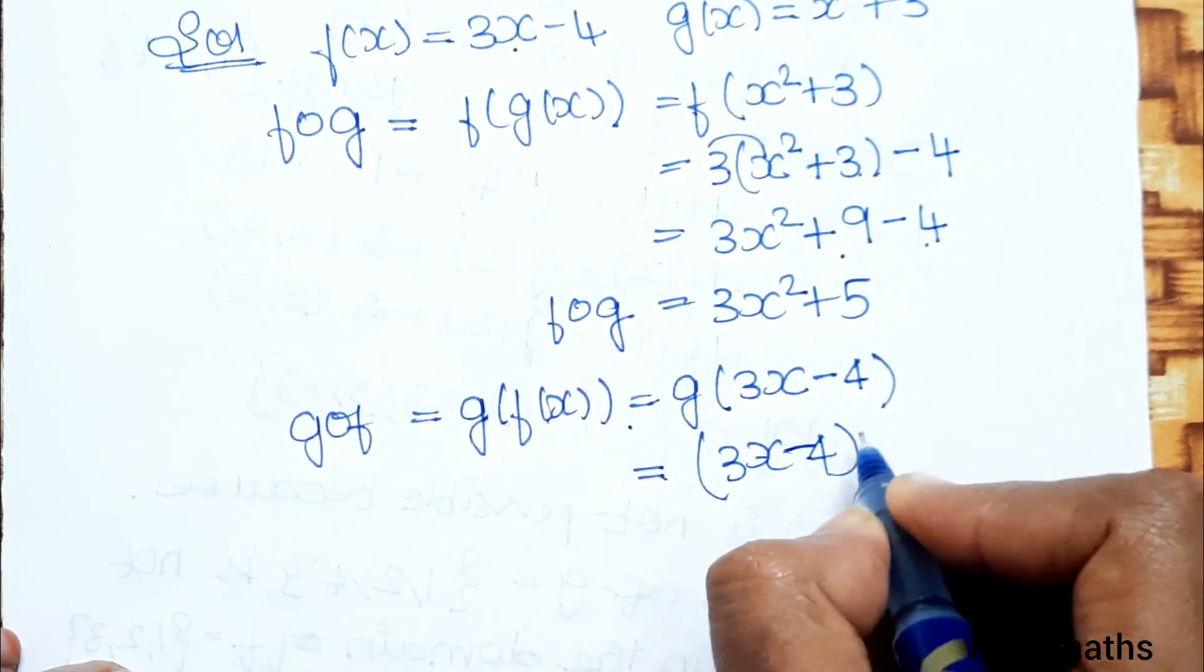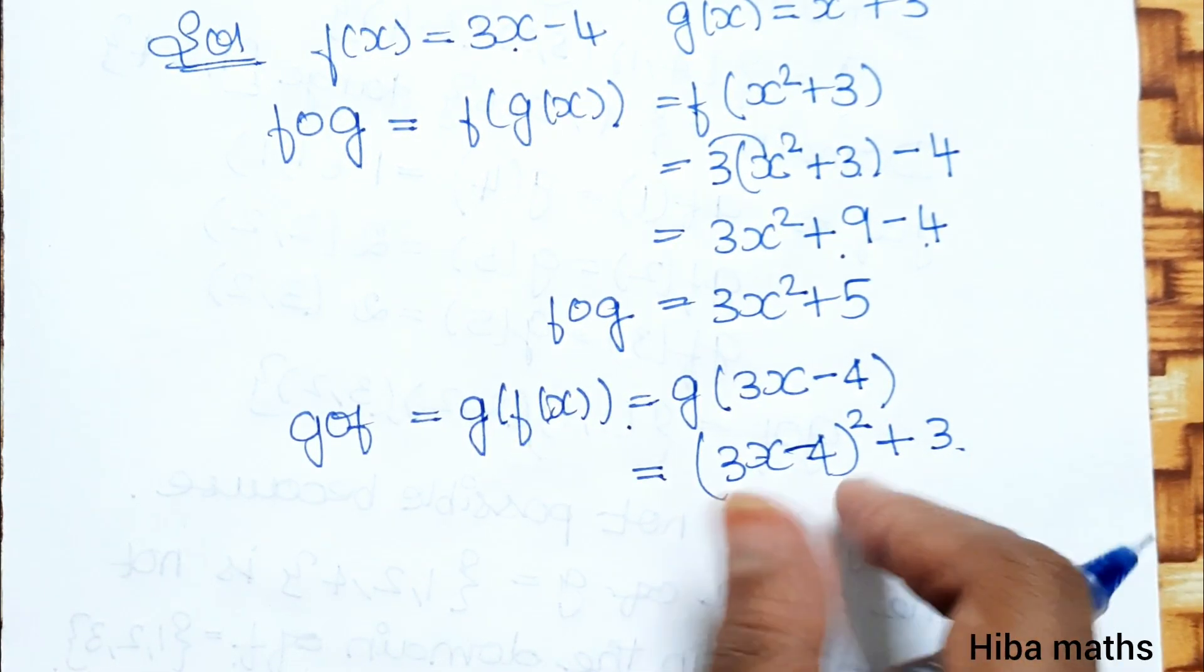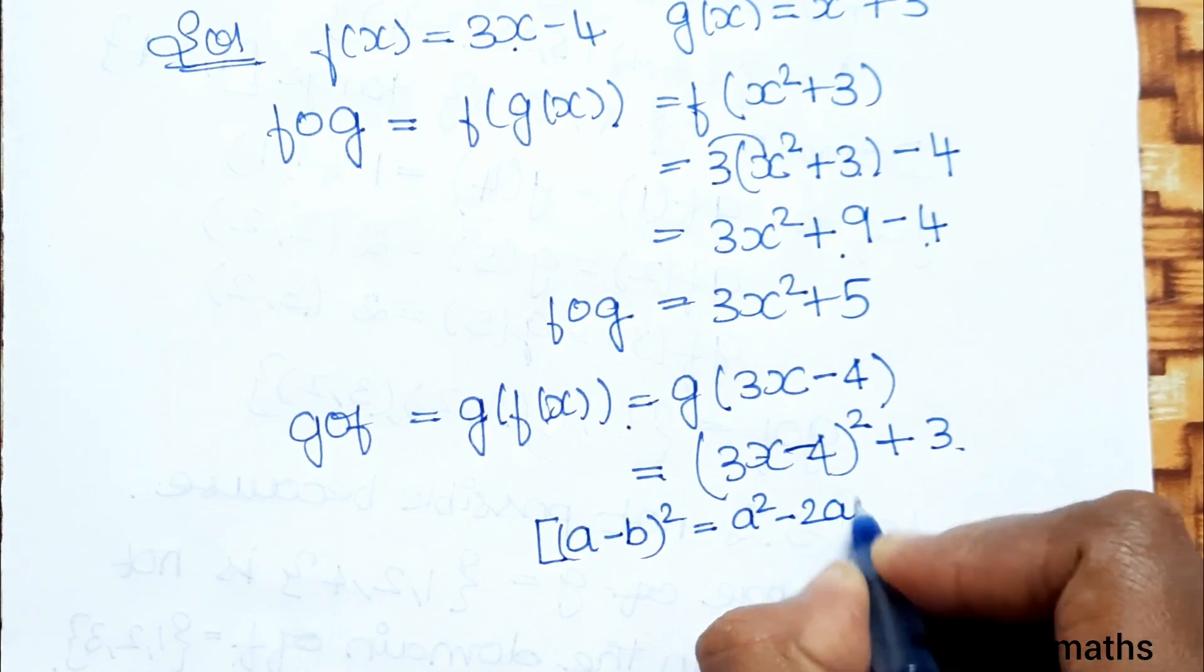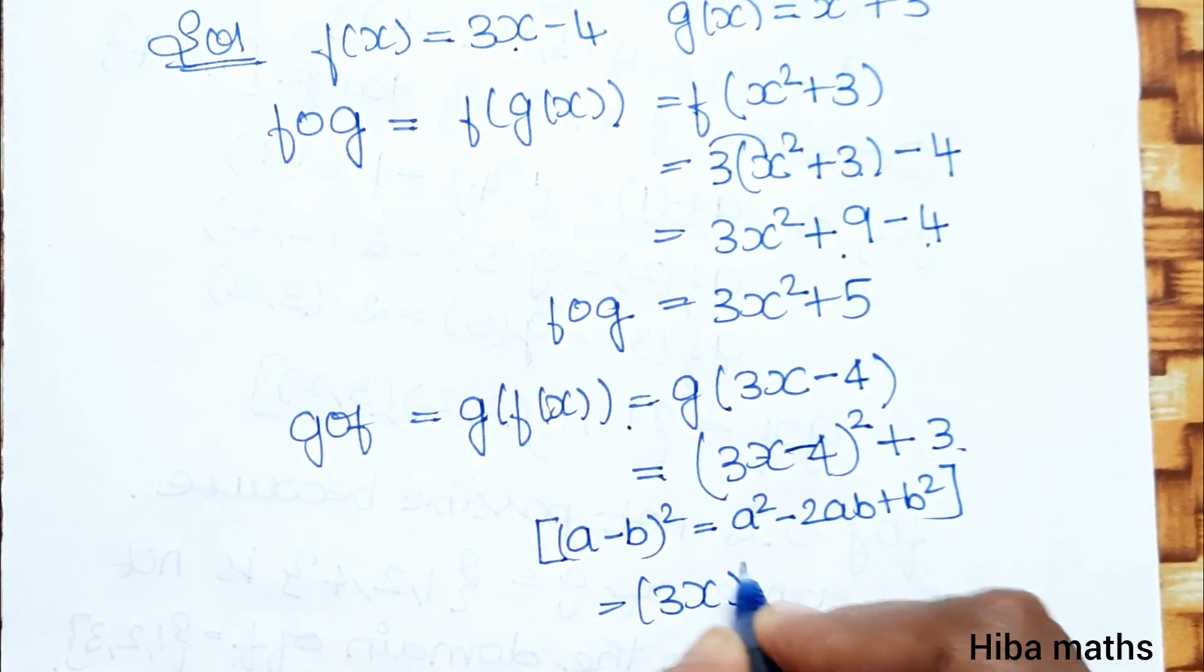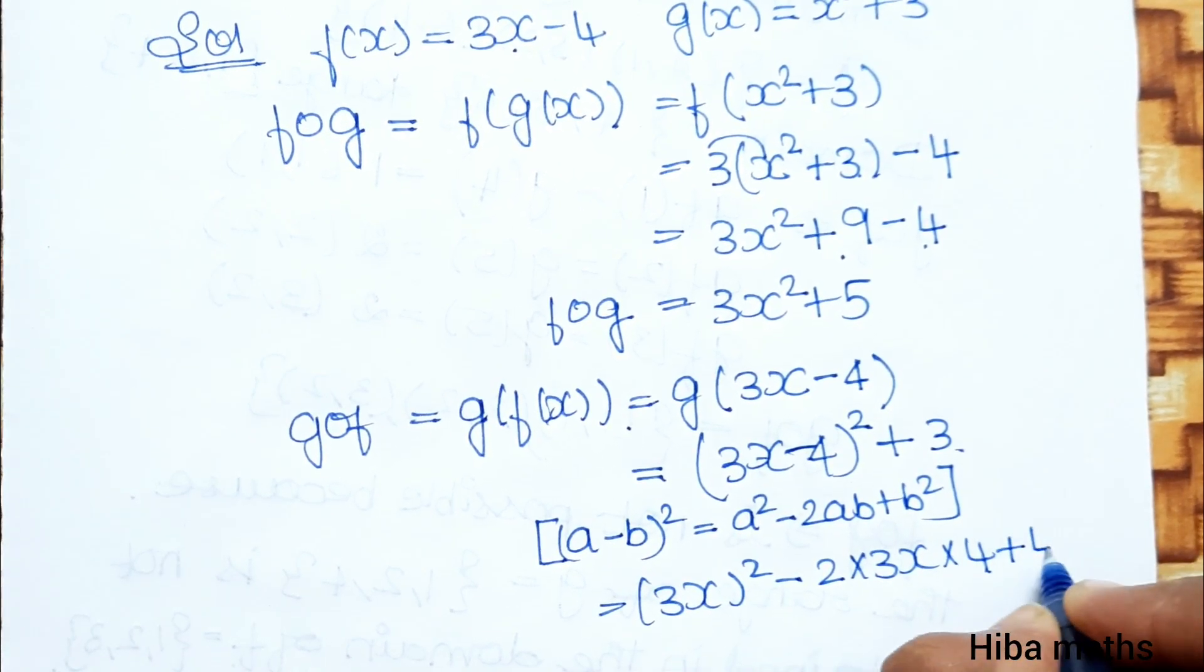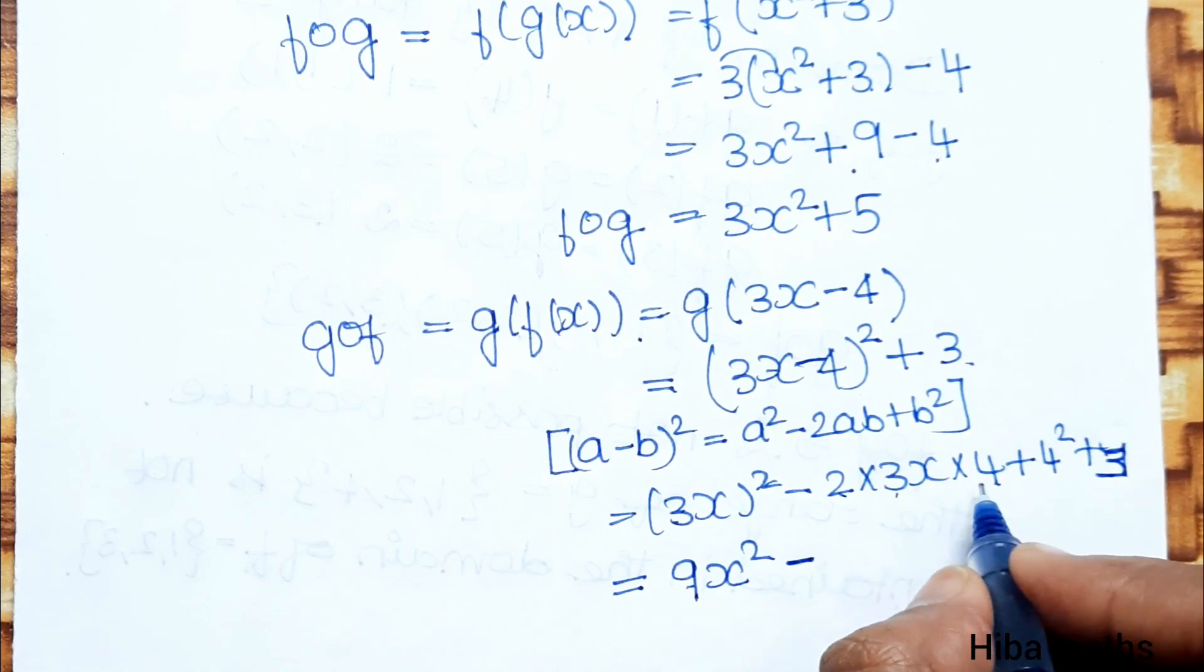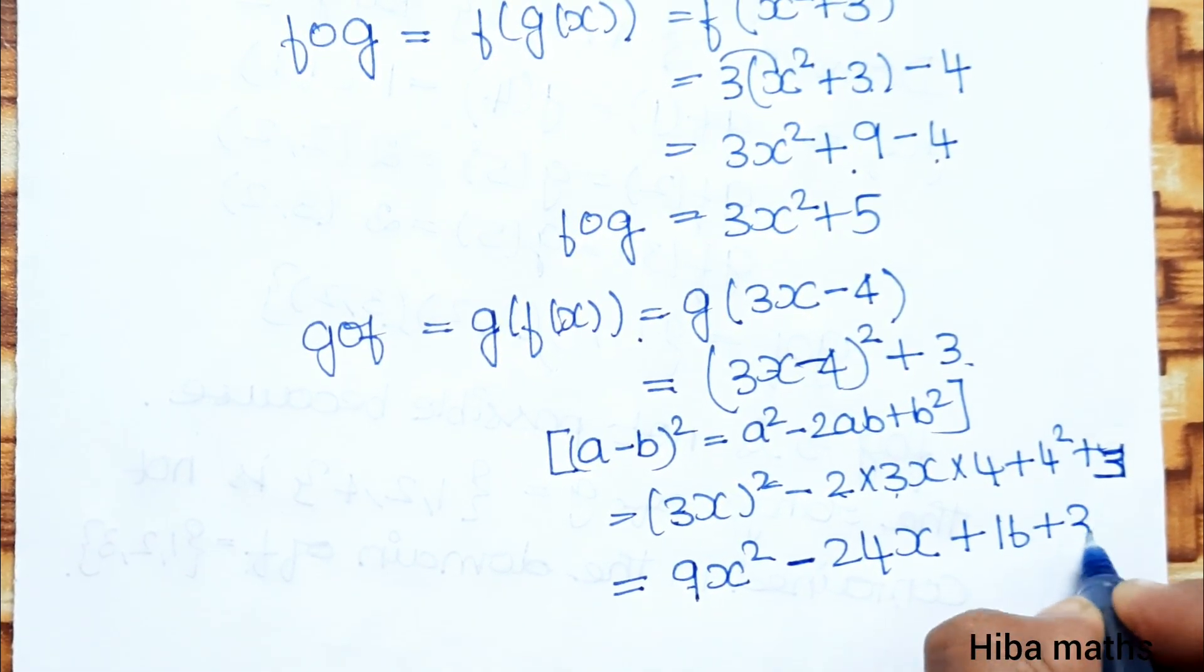So (3x minus 4) square plus 3. Using the formula (a minus b) square, this equals 3 square which is 9, so 9x square, then 2 into 3 into 4 which is 24x, plus 4 square which is 16, plus 3.